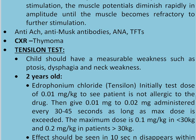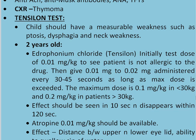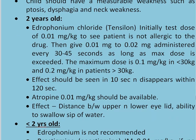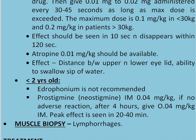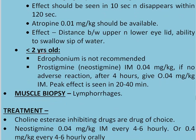For the Tensilon test, the child should have a measurable weakness such as ptosis, dysphagia, or neck weakness. In children over 2 years, adrophonium chloride (Tensilon) is used: initially a test dose of 0.01 mg/kg to check for allergy, then 0.01–0.02 mg/kg administered every 30–40 seconds until the maximum dose is reached. Maximum dose is 0.1 mg/kg in patients under 30 kg and 0.2 mg/kg in patients over 30 kg. Effect should be seen in less than 10 seconds and disappears within 20 seconds. Atropine 0.01 mg/kg should be available for any untoward incident. The effect is checked by the distance between upper and lower eyelid and inability to swallow a sip of water. In children under 2 years, adrophonium is not recommended; instead give prostigmine or neostigmine intramuscular 0.04 mg/kg. If no adverse reaction after 4 hours, give 0.04 mg/kg intramuscular. Peak effect is seen in 20–40 minutes. Muscle biopsy can check for lymphorrhages.